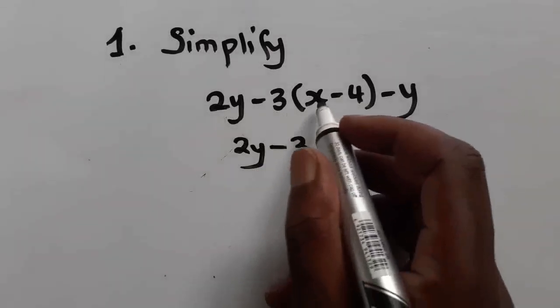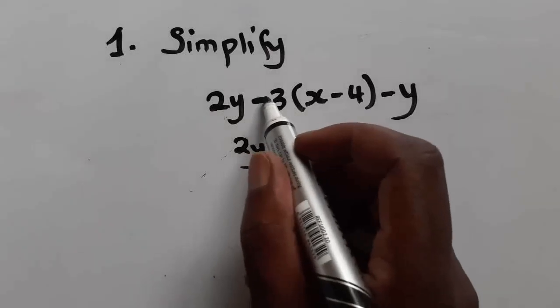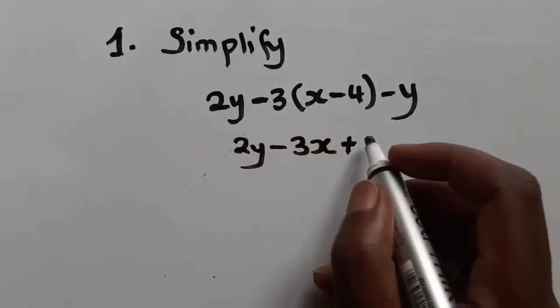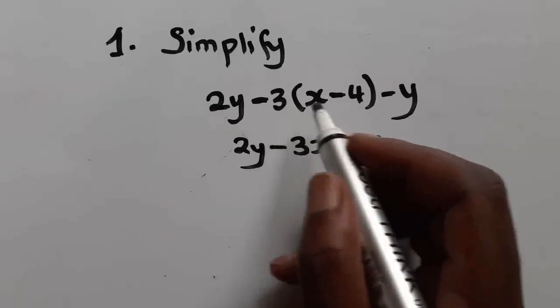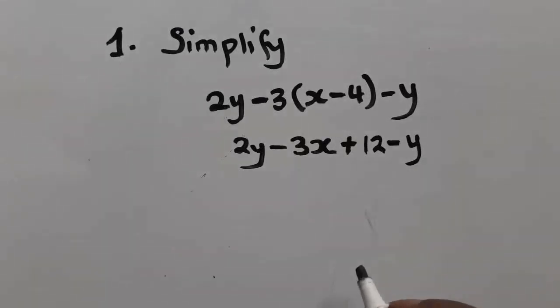So we're going to have 3 multiplied by x, we'll get 3x. This minus here, please take note. The minus and the minus here are going to have a plus, 12. 3 multiplied by 4, we get 12. Minus y.